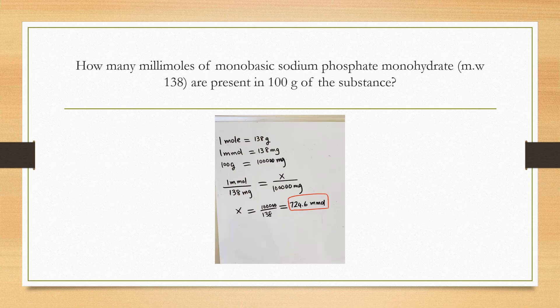Okay, let's look at a problem. How many millimoles of monobasic sodium phosphate monohydrate, molecular weight 138, are present in 100 grams of the substance? So we have the molecular weight of 138. That means one mole of monobasic sodium phosphate monohydrate is 138 grams. That also means one millimole of that substance is 138 milligrams.